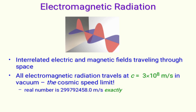Electromagnetic radiation consists of interrelated electric and magnetic fields traveling through space. All electromagnetic radiation travels at c = 3 × 10⁸ m/s in vacuum. This is the cosmic speed limit.